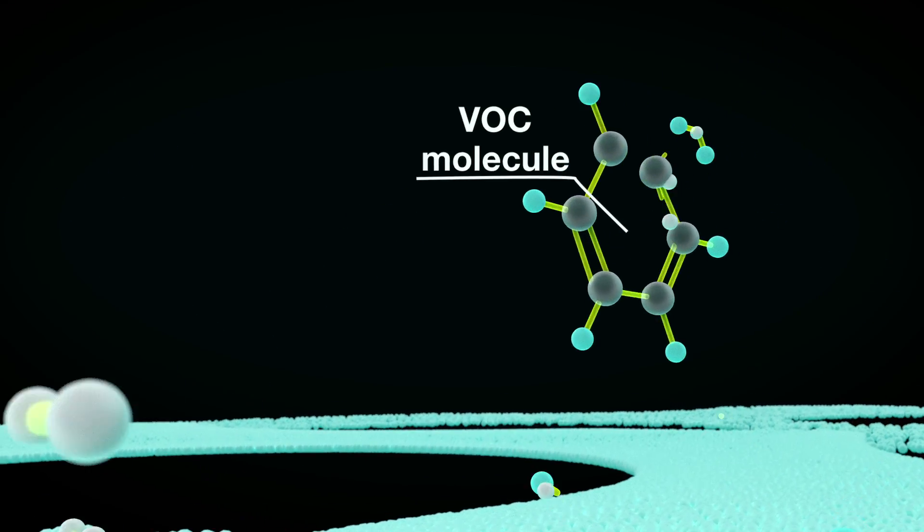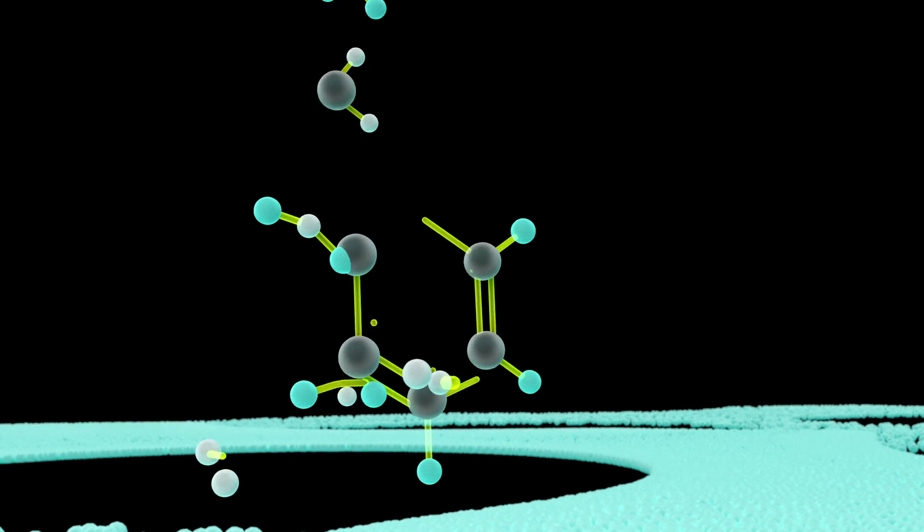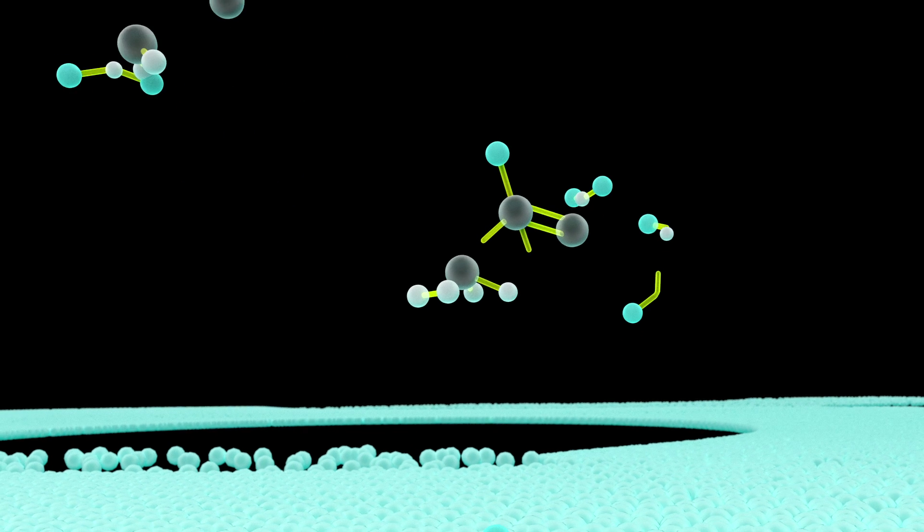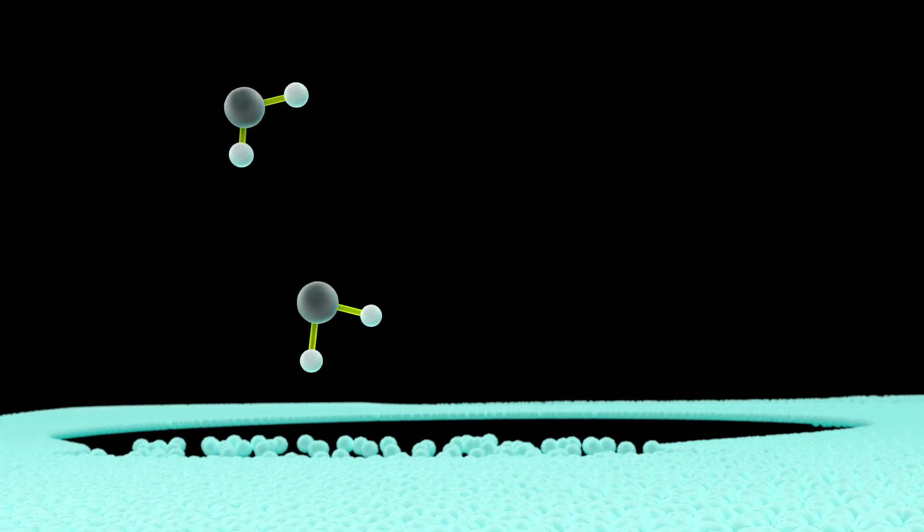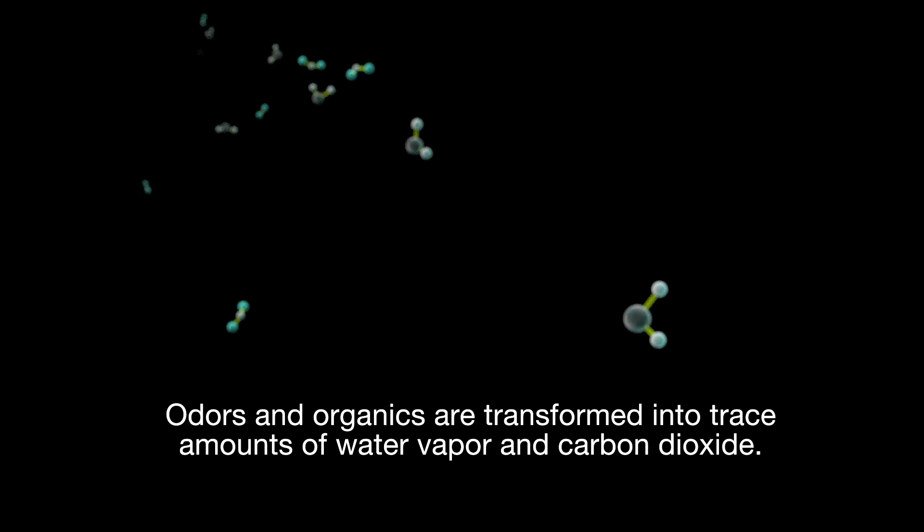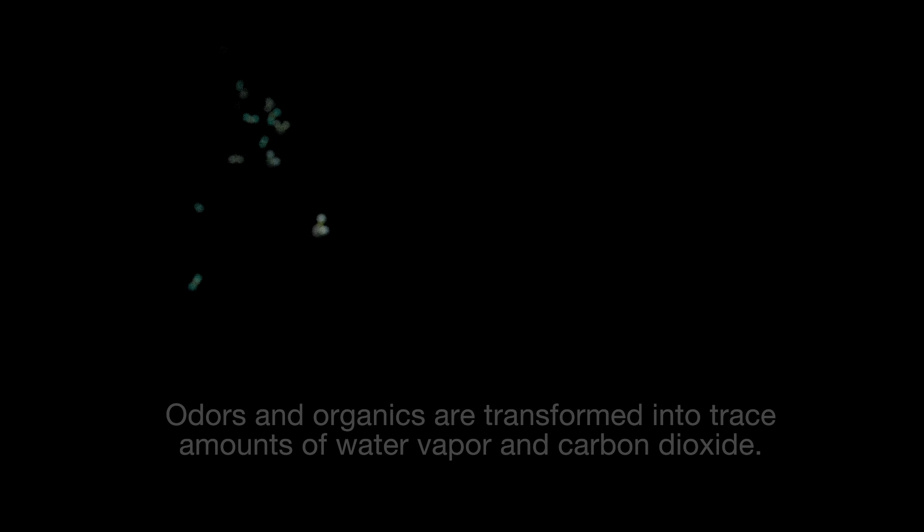As odors, germs, mold and other VOC organic molecules approach the PCO field, they are disassembled as the oxidizers pull electrons from them. The purification process is completed with the remaining molecules recombining to form simple water vapor and trace amounts of carbon dioxide.